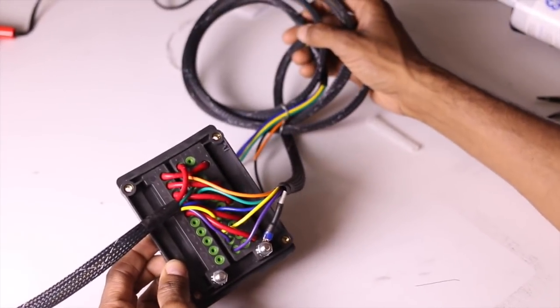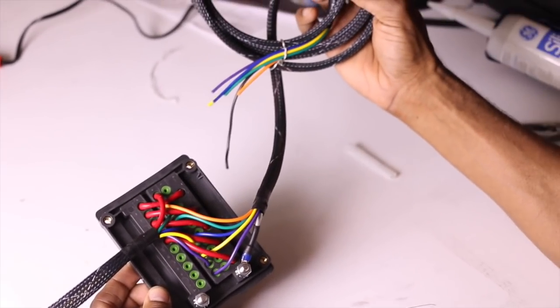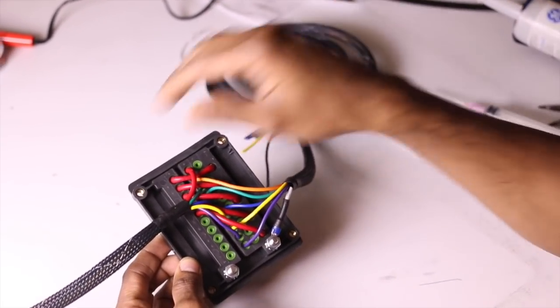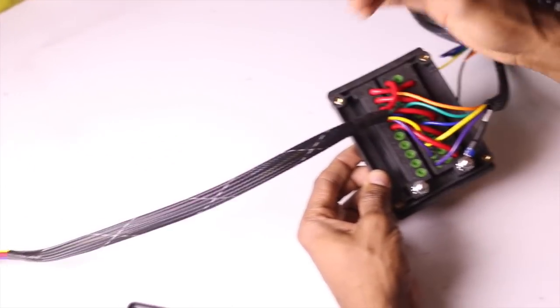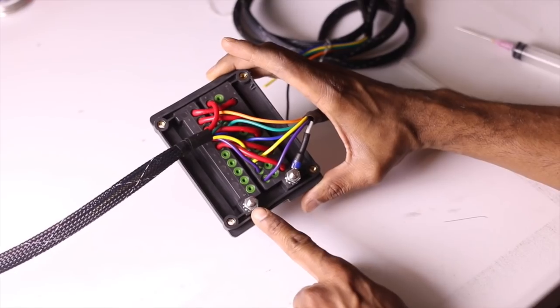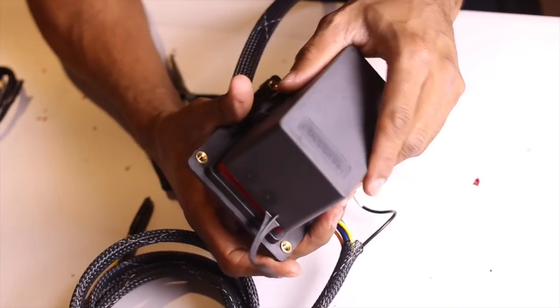So the longer wire goes to your switches that has six wires in it, and the small wire goes to your accessories that has five wires from your relay panel, and then you have the left side of the relay panel goes to the positive of the battery.